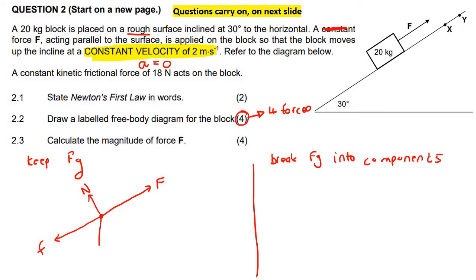Over here you could say W, but I'm going to say FG. Notice that I've kept it like that. I didn't break it up into parallel and perpendicular. So let's count how many forces there are: one, two, three, four. And that is where the four marks comes from.